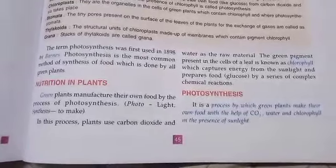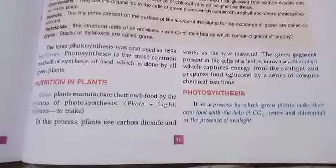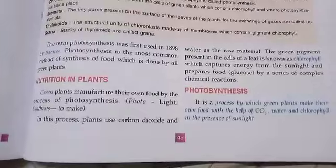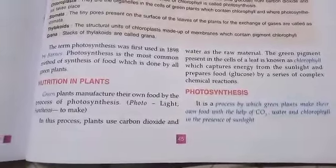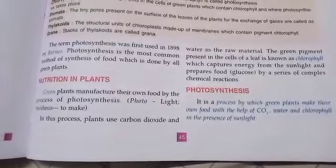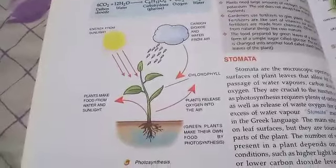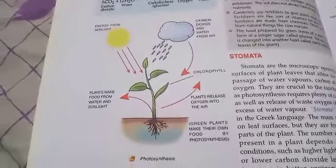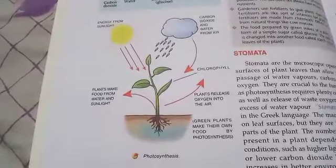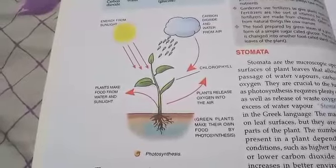So, photosynthesis is a process by which green plants make their food with the help of carbon dioxide, water, and chlorophyll in the presence of sunlight. You must mention chlorophyll, which is extremely important. In the picture, you can see the plant taking water from rain or from the soil, and sunlight providing energy.